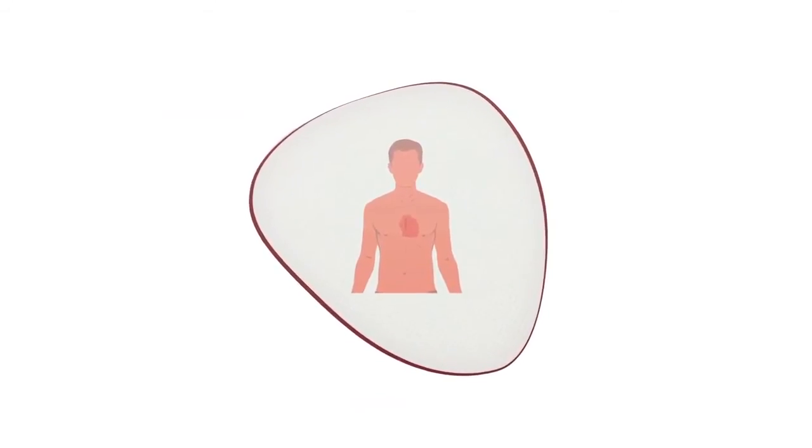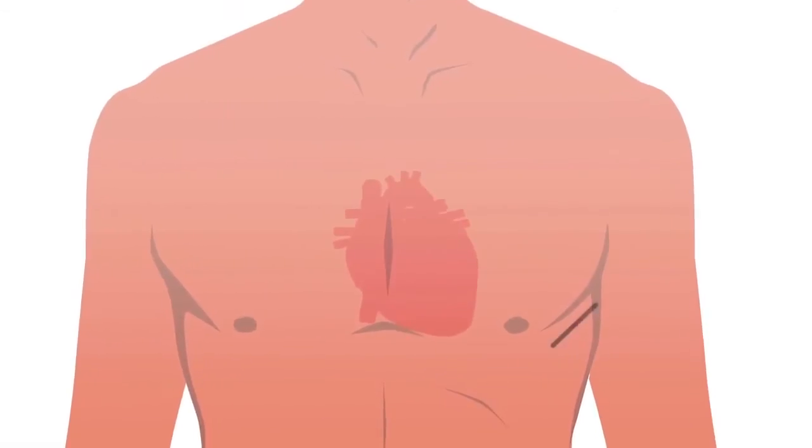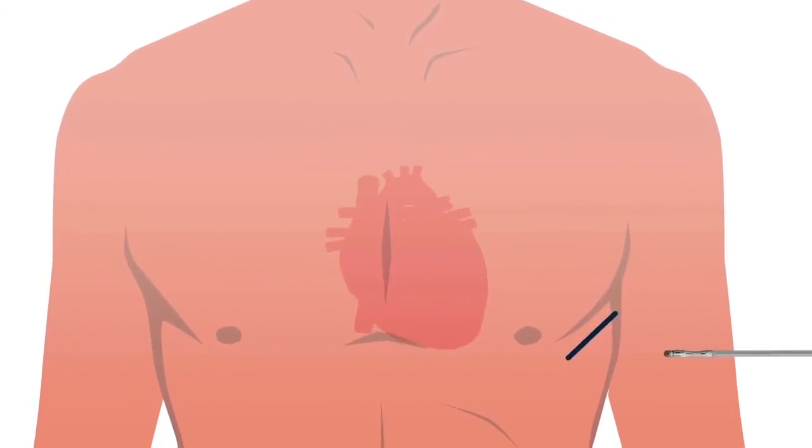Depending on the doctor's usual practice, a local or general anesthetic is given to make the patient comfortable during the one-hour procedure. An incision is made on the left side of the chest. A pocket is formed under the skin where the SICD device is fitted.